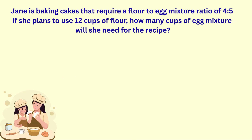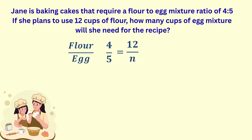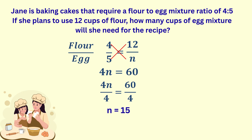An alternative method is writing the original ratio as a fraction. The ratio of cups of flour to egg is four to five, so we write four over five as a fraction and equate it to an equivalent ratio that has twelve in the numerator for cups of flour. The cups of egg — the value we don't know — we call n. To solve this equation, we multiply both sides by the product of the two denominators, which is the same as cross-multiplying. Hence, we get 4n equals 60. Divide both sides by four and we get n equals fifteen — the same answer as before.